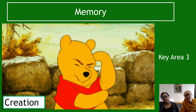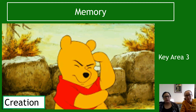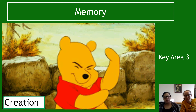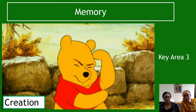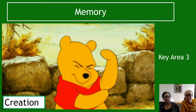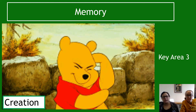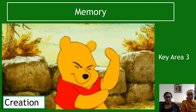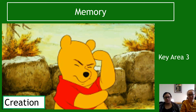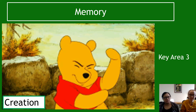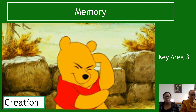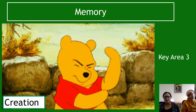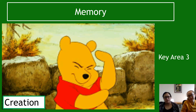This is key area three of unit three of human biology. We're currently on the neurobiology and immunology unit. This key area is about memory, and we're going to be starting with a little section about how memories are created.